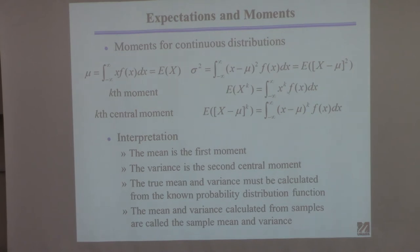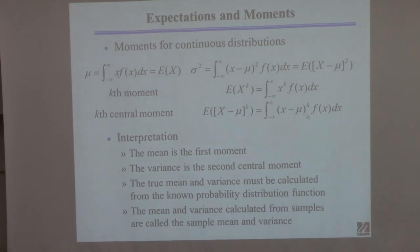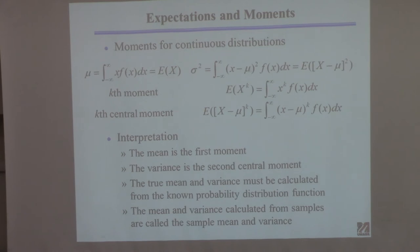The first moment means the mean. There's also the kth central moment: you take x, subtract off the mean mu, raise it to the k power, multiply by f, and integrate. That's called the kth central moment — it's 'central' because you subtract off the mean. The variance is clearly the second central moment of the distribution, since k equals 2.